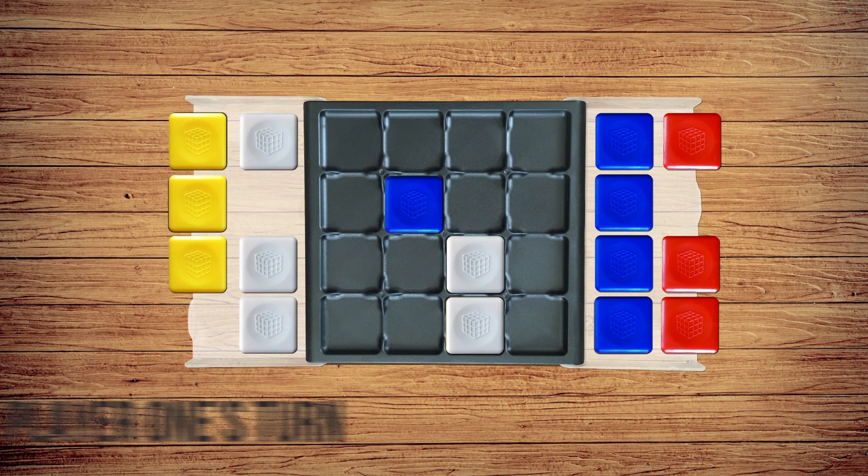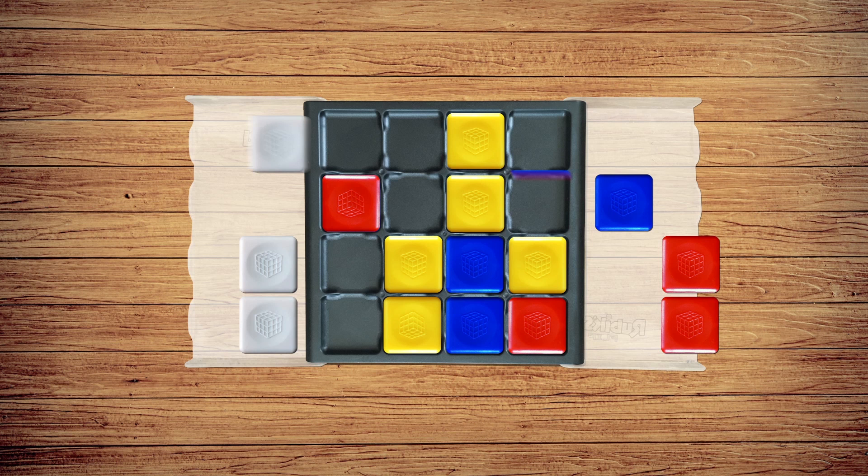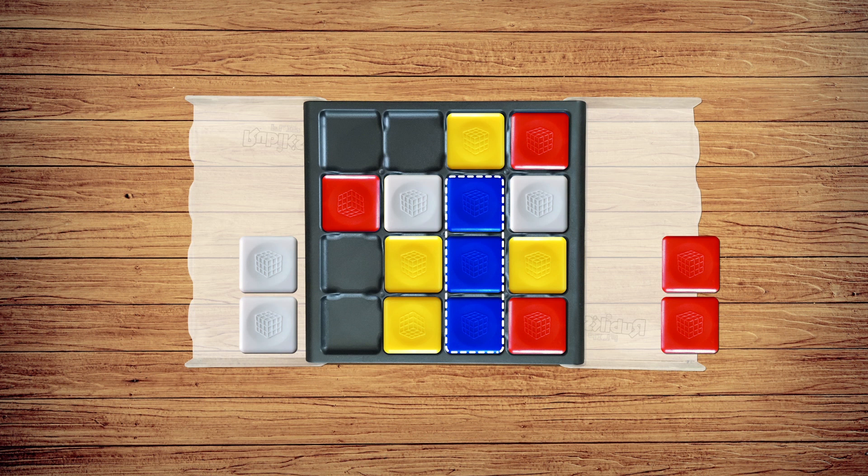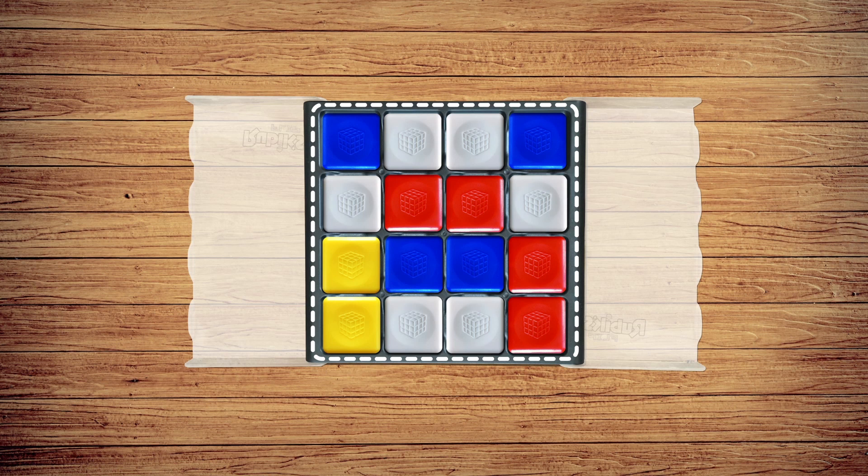And that's the game! Play continues until one player has made a locked row of three of their own tiles of the same color, horizontally, vertically, or diagonally. The tiles are locked if all adjacent squares are occupied, and none of these tiles can be flipped. That player wins the game! If no one has won and the board is full, the game ends in a draw.